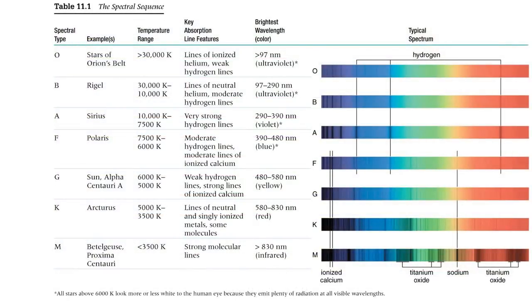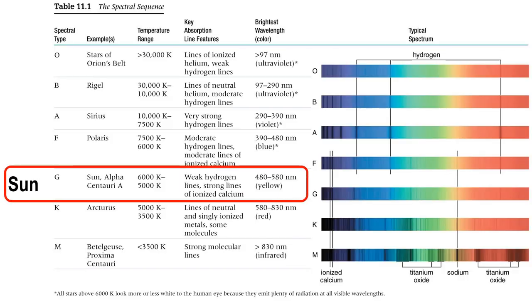Here's another diagram I like because it gives each spectral class — O, B, A, F, G, K, M — an example star. For B class, there's Rigel, and it gives a B class spectrum. Down in M class you see Betelgeuse and Proxima Centauri — two completely different stars, but their surface temperatures are similar and their spectral lines are similar. The Sun is kind of right in the G area: weak hydrogen lines, strong lines of ionized calcium, and sodium — a bunch of different metals.